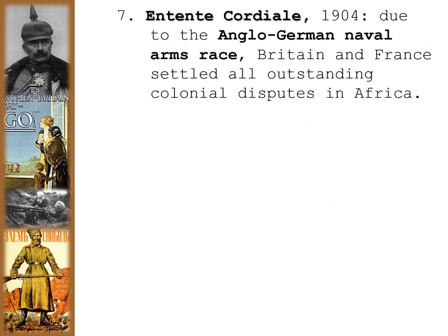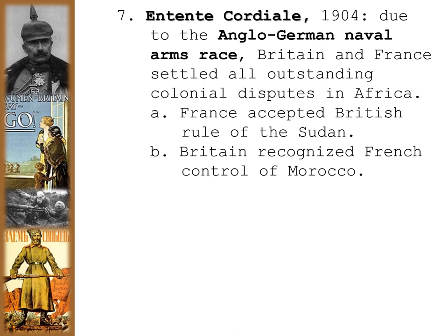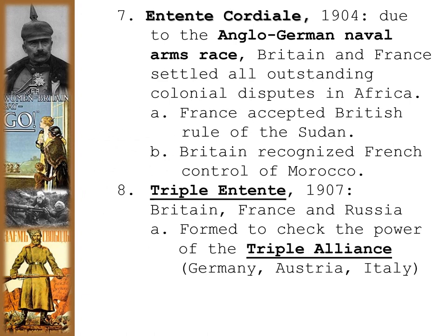The Entente Cordiale was created in 1904. Due to the Anglo-German naval arms race, Britain and France decided to put their differences aside, both concerned about the growth of German aggression. Britain and France settled all outstanding colonial disputes in Africa: France accepted British rule of the Sudan, and Britain recognized French control of Morocco. This became the basis for the Triple Entente. In 1907, Britain, France, and Russia formally formed the Triple Entente to check the power of the Triple Alliance of Germany, Austria, and Italy.